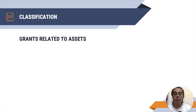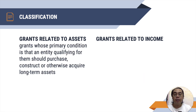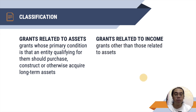There are two types of government grants: grants related to assets and grants related to income. Grants related to assets are grants whose primary condition is that an entity qualifying for them should purchase, construct, or otherwise acquire long-term assets — the condition is simply to purchase or construct long-term assets. Grants related to income are those grants other than those related to assets.